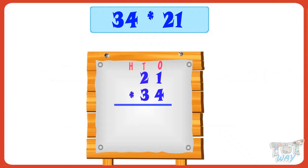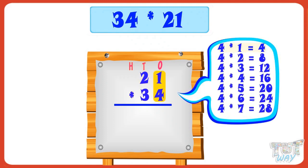In any sum — addition, subtraction, or multiplication — we first align the numbers. Now, first multiply 21 with the ones digit of 34. 4 multiplied by 1 equals 4. Write 4 in the product at ones place. 4 multiplied by 2 equals 8. Write 8 in the product at tens place.